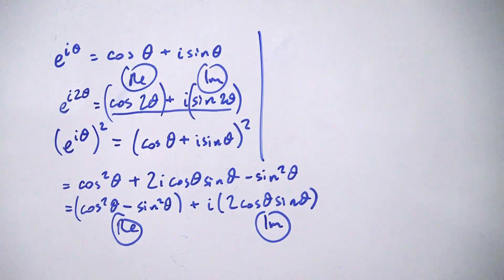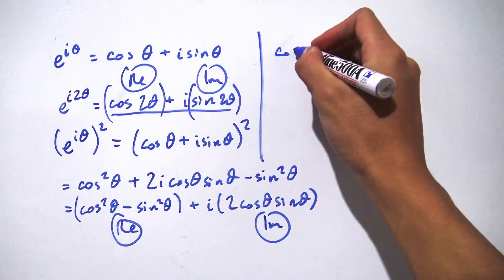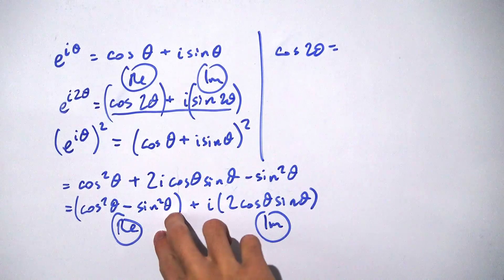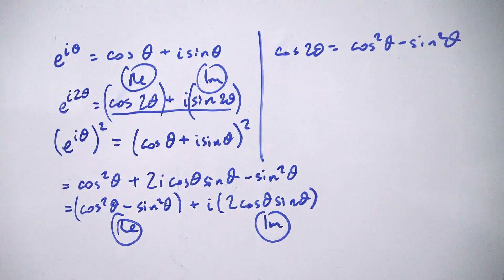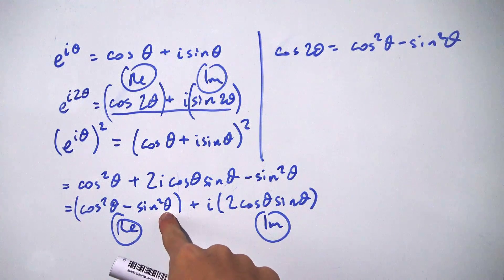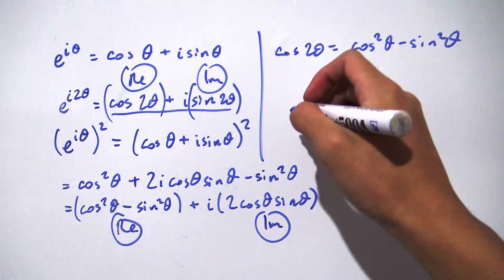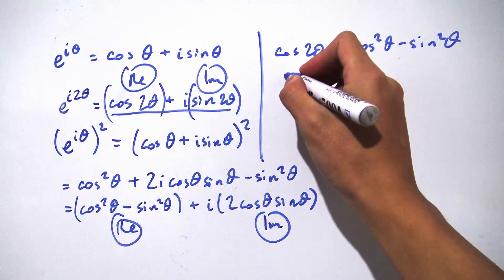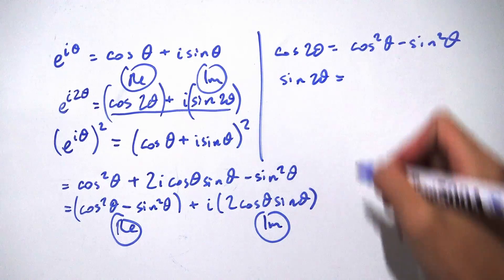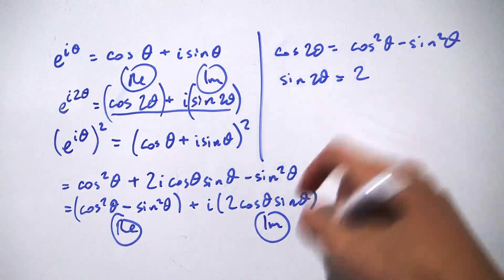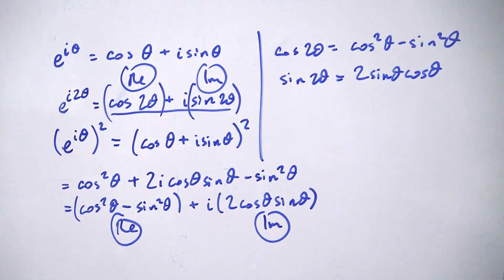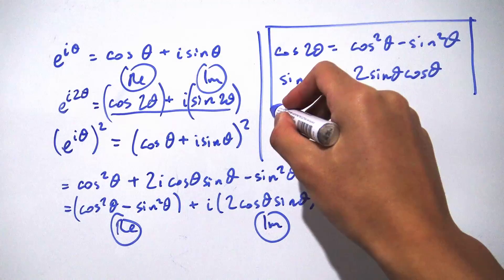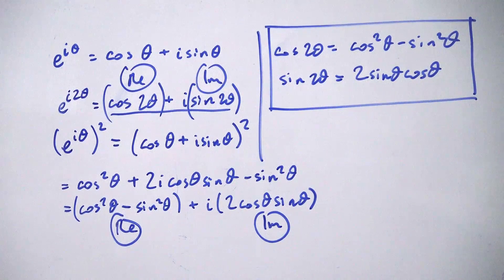So what does that mean? The real part gives us cosine of 2θ equals cosine squared θ minus sine squared θ — notice we've gotten rid of the 2θ and only have θ in the arguments. And comparing the imaginary parts, sine of 2θ equals 2 sine θ cosine θ. There you go — those are the double angle identities for cosine and sine, derived using Euler's formula.